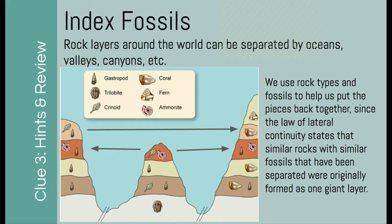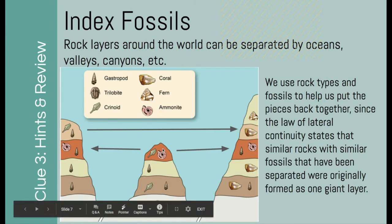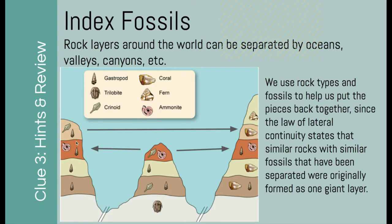Over time, things like erosion, weathering, or plate tectonic shifts actually separated these layers from one another. So in this picture, you can use the fact that this fossil and this fossil are in this layer, and they're also found in this layer over here. This ammonite is found only in this dark brown layer. So you know that all of these go together. The ammonite only occurs in one layer and was widespread across the earth, so we can use it to line everything up.